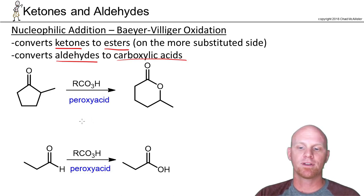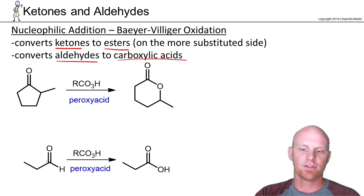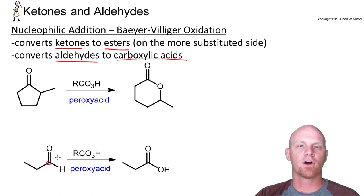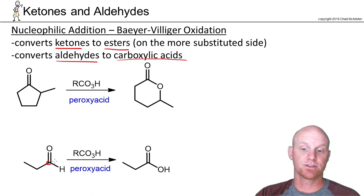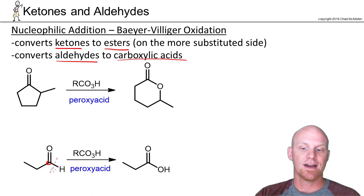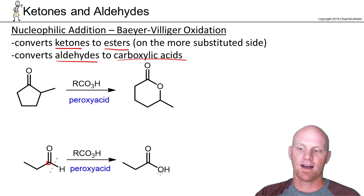Let's look at the aldehyde one first. Aldehyde to carboxylic acid: if you look at the carbonyl carbon, it's going to break one of the adjacent bonds, and it prefers hydrogen. So we're going to break this bond right here, and it's just going to insert an oxygen in between, and that's why we now have a carboxylic acid.